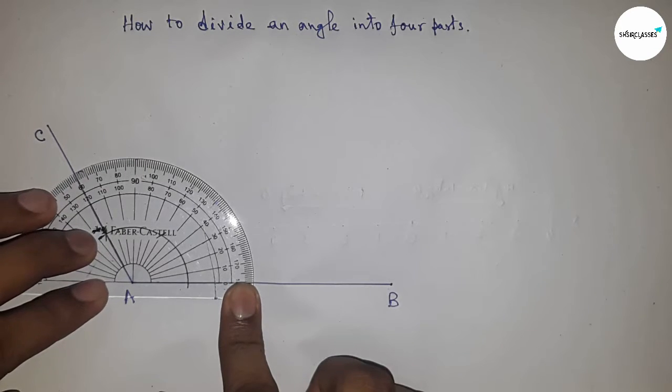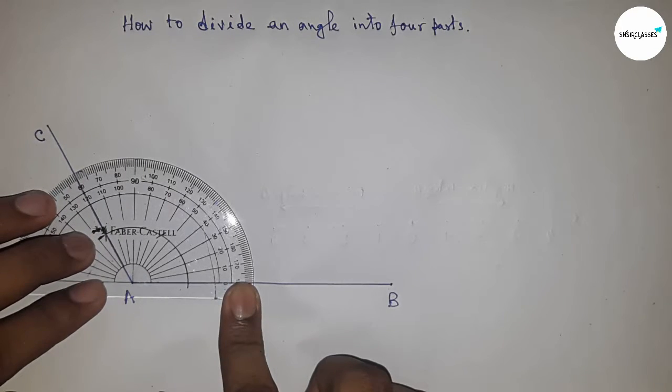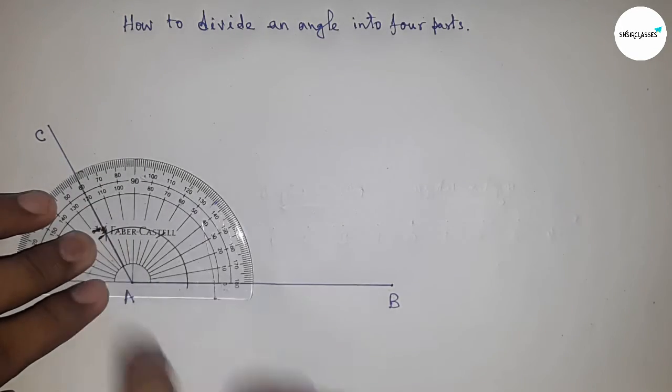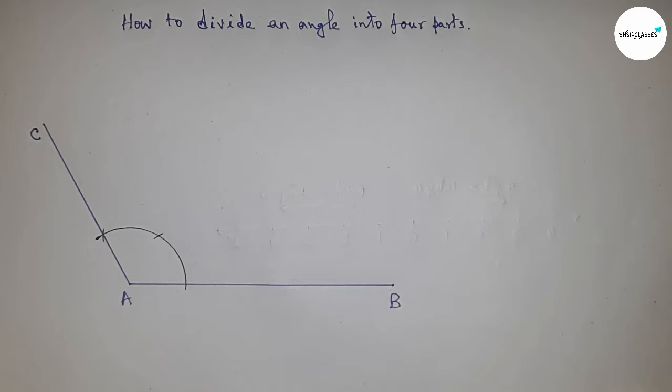So angle BAC equals 120 degrees. Now checking — this is perfectly 120 degrees. You can take another angle to divide into four parts as well.